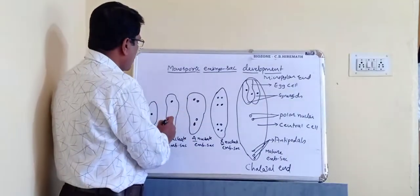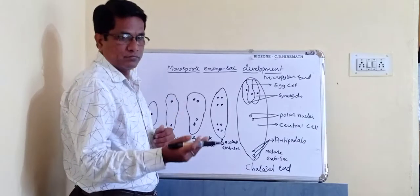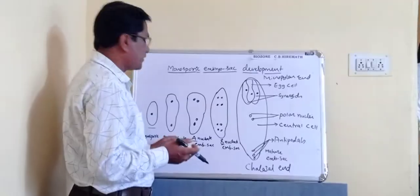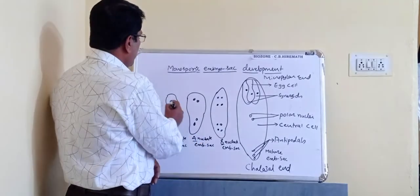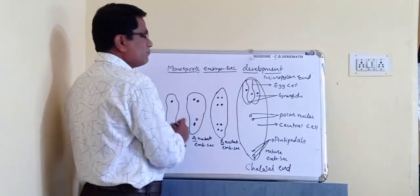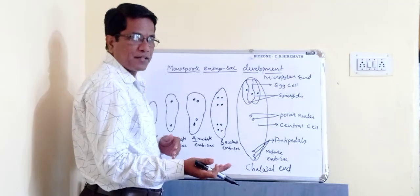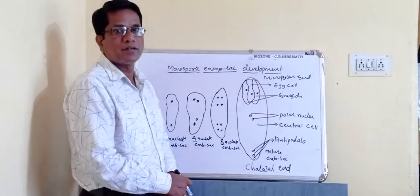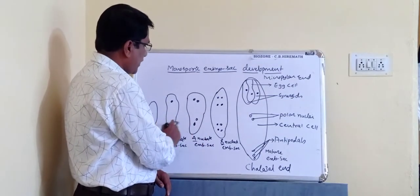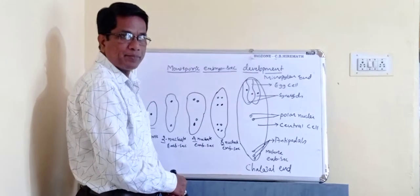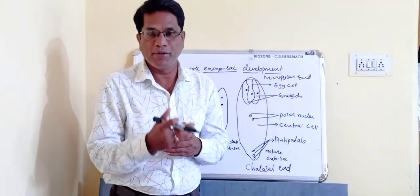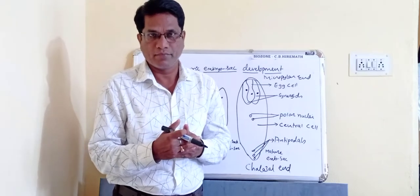This mitotic division of the nucleus of the megaspore gives rise to two nuclei, and that condition is called a two-nucleated embryo sac. The nuclei then move to the respective poles. Next, these two nuclei undergo sequential mitotic divisions to form four and then eight nucleated conditions — two-nucleated, four-nucleated, and eight-nucleated embryo sac. This is a free nuclear type of mitotic division.